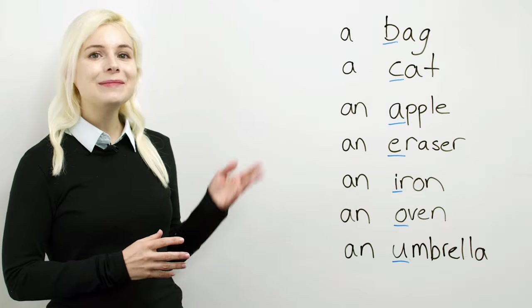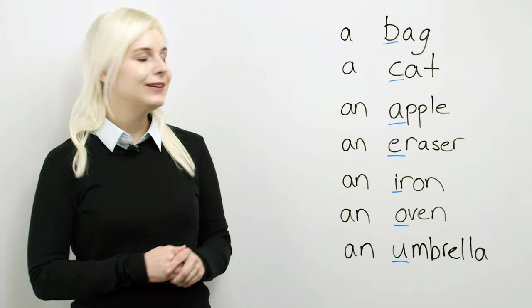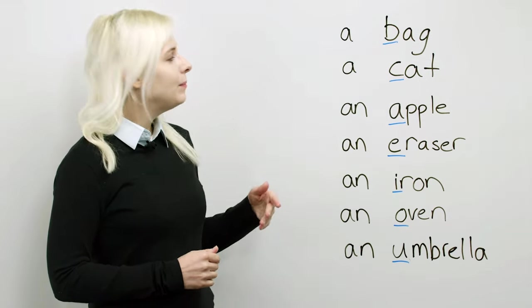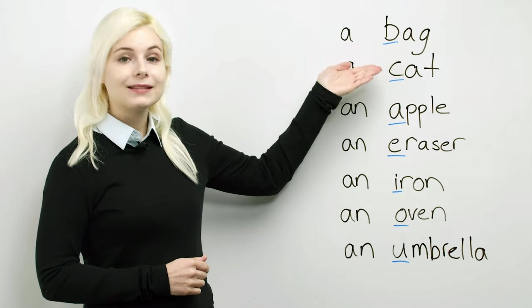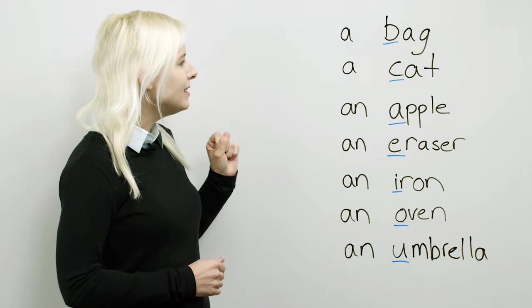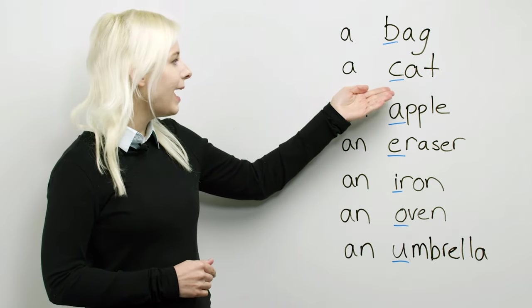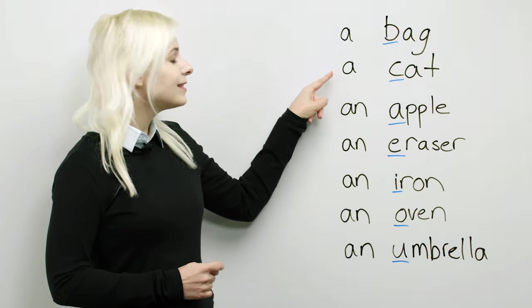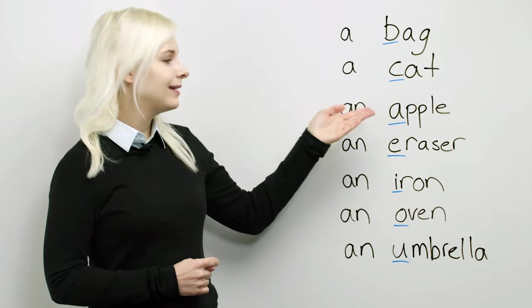Let's take a look at the board again to check this rule. First, we have a bag. Bag starts with a B, that's a consonant, so a bag. Second, we have a cat. Cat starts with C, that's a consonant, so this is correct, a cat.